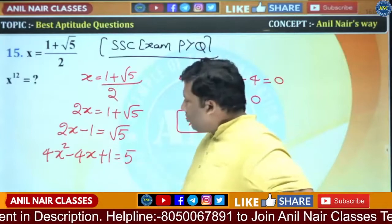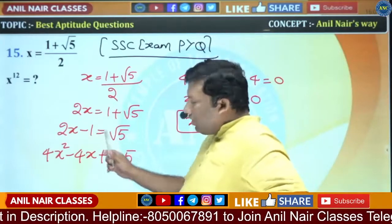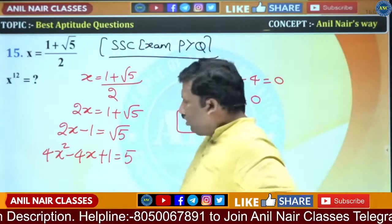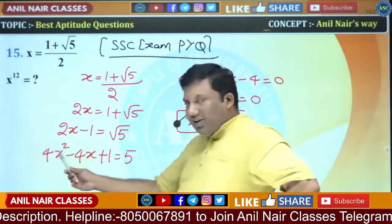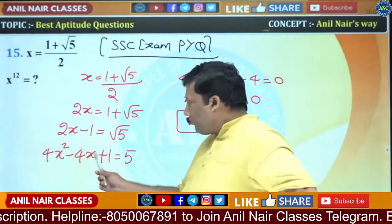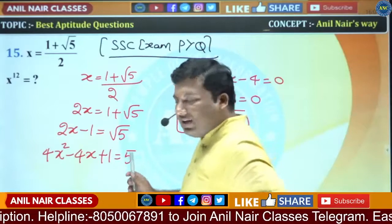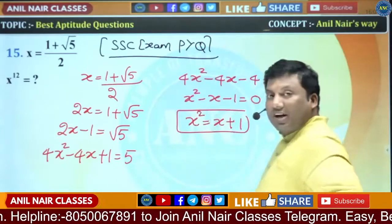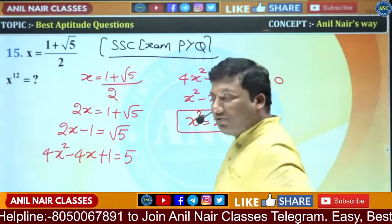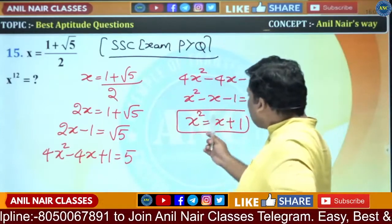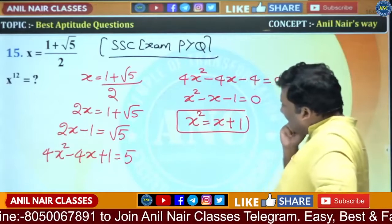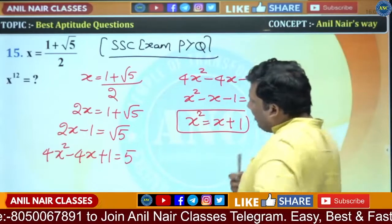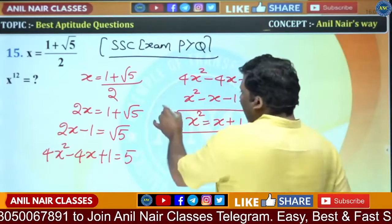2X minus 1 is √5. Squaring: 4X² minus 4X plus 1 equals 5. Bringing 5 to the left gives minus 4, and we get X² equivalent to X plus 1. I will use this identity going forward.